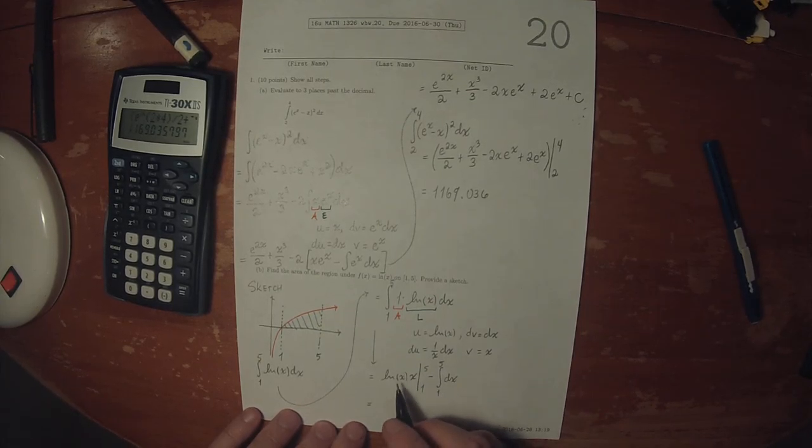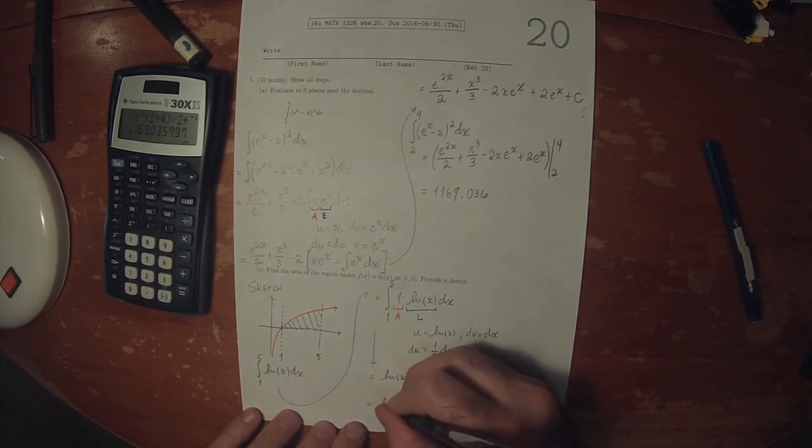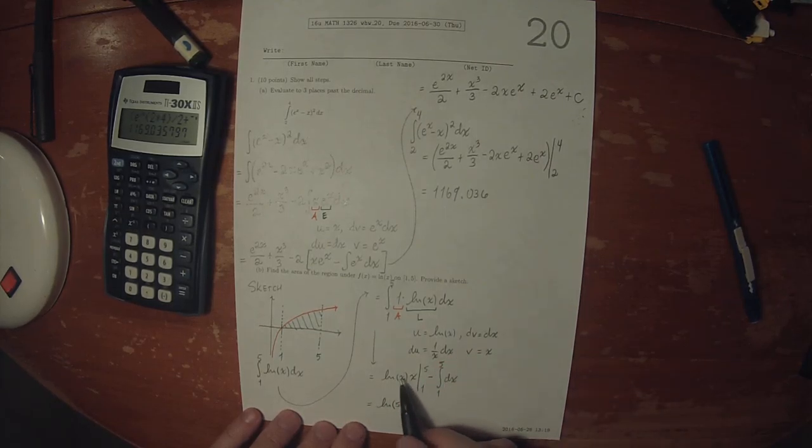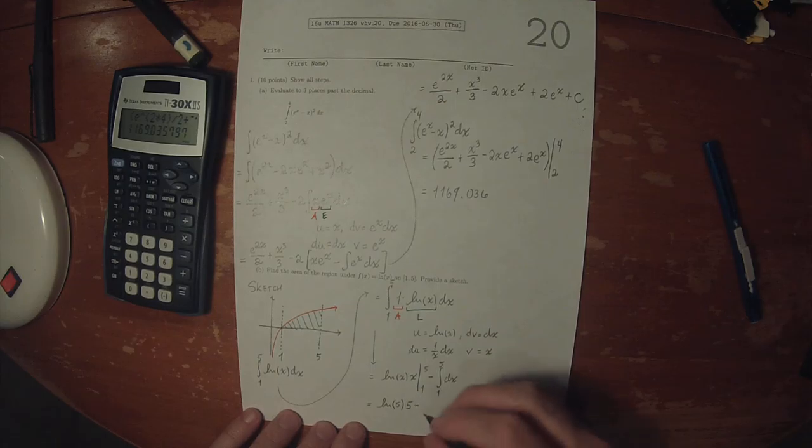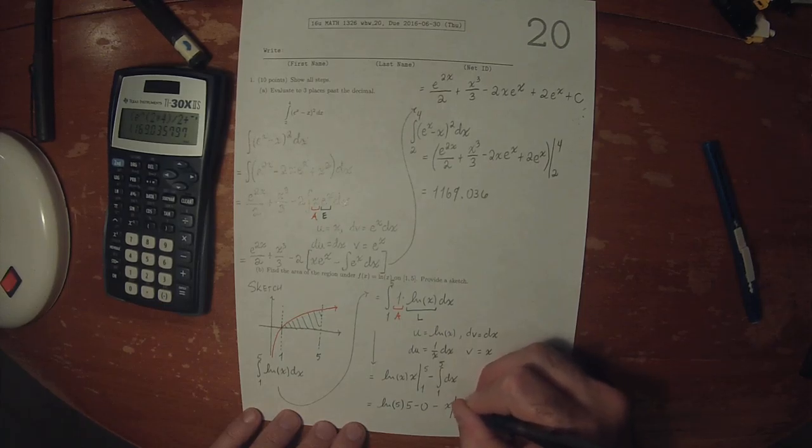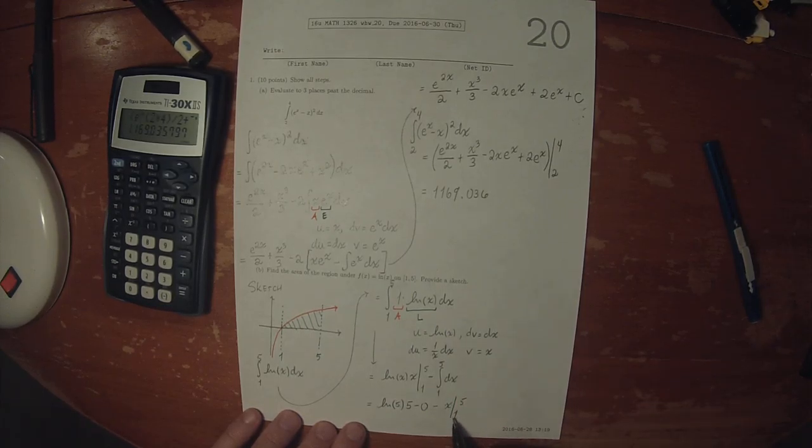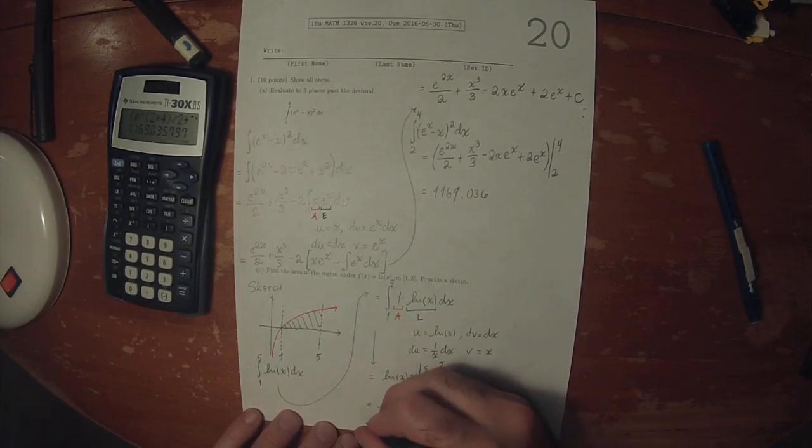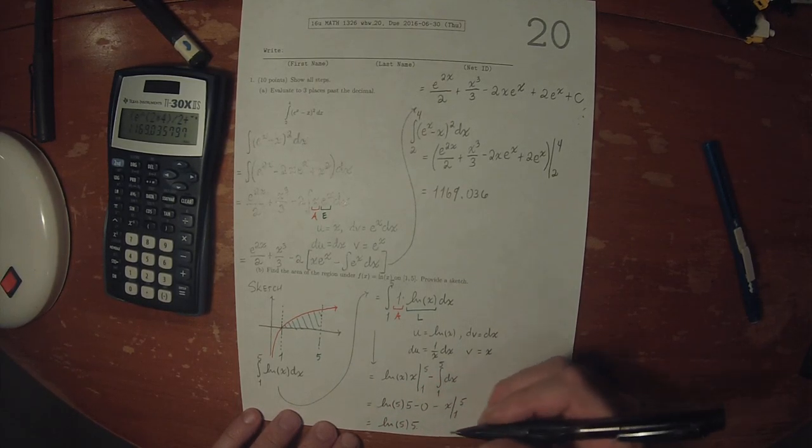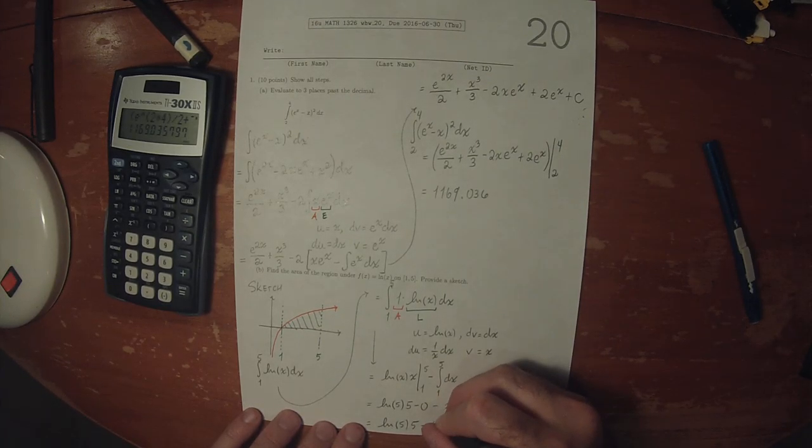So evaluating this: this will be log 5 times 5 minus log 1 times 1. But log of 1 is 0. And then minus antiderivative of dx is x, evaluated from 1 to 5. x evaluated from 1 to 5 is 4. So that's log of 5 times 5 minus 4.